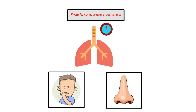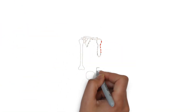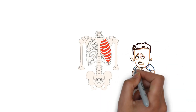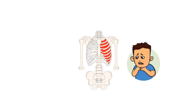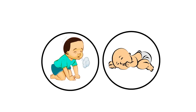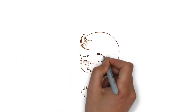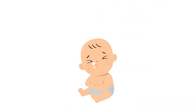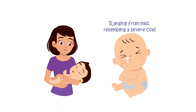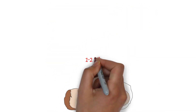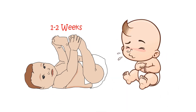Flaring of the nostrils and worsening cough may also be observed. The intercostal muscles between the ribs may retract during each breath, indicating increased effort required for breathing. Infants with bronchiolitis may experience feeding difficulties if they are struggling to breathe and may also get tired easily. Typically, the symptoms peak in severity 2-3 days after onset, ranging from mild, resembling a severe cold, to severe cases characterized by significant breathing difficulties. Following the peak, symptoms gradually get better within 1-2 weeks, although an irritating cough may persist for a longer period.